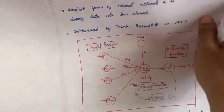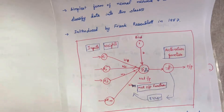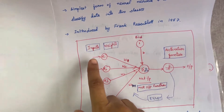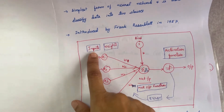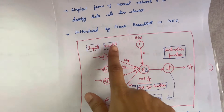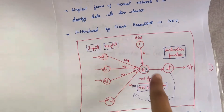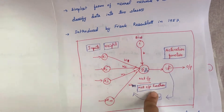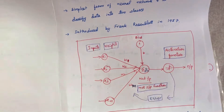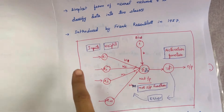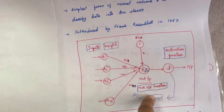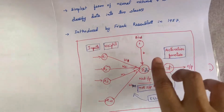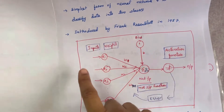Coming to the architecture of this perceptron neural network, there are four main parameters. One is inputs, the second is weights and bias, the third one is net input function, and the fourth is activation function. These are the four main parameters which comprise your perceptron neural network.